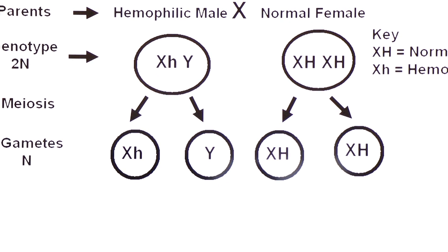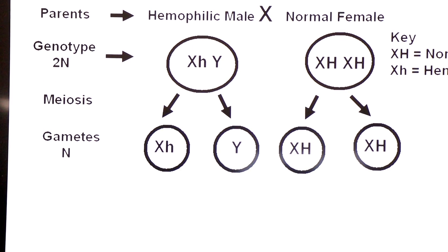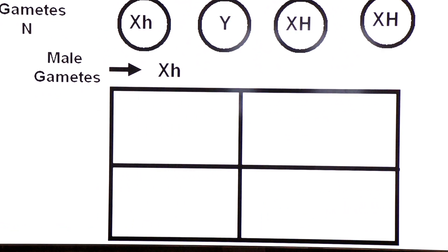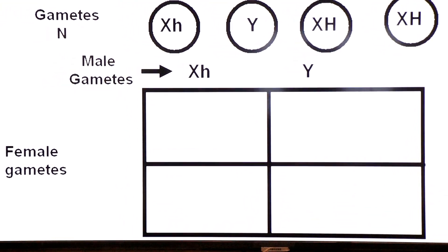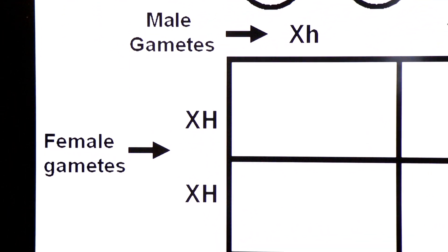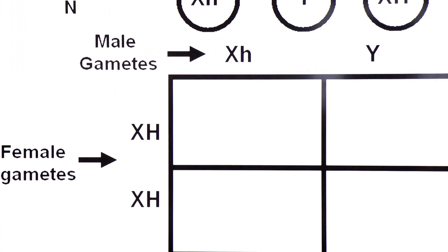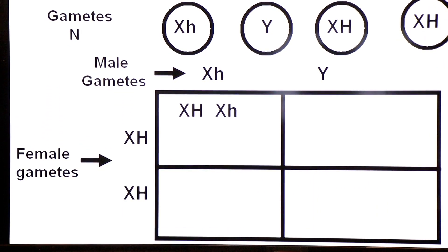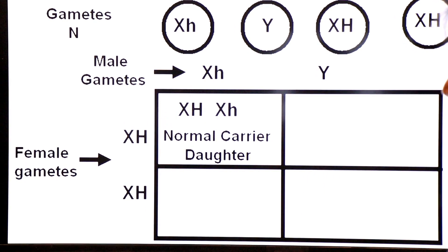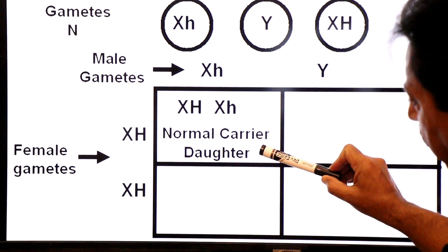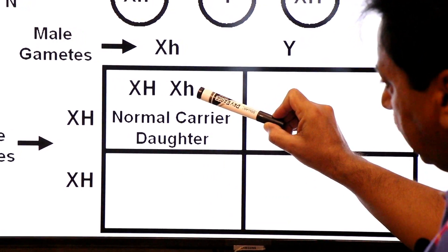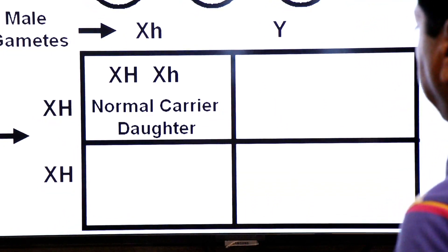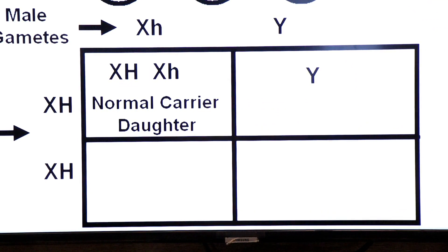Now we show possible offspring in a Punnett square. Male gametes (X small h and Y) are placed on top; female gametes (X capital H and X capital H) on the left. First box: from left X capital H and from top X small h — that will be a normal carrier daughter. A carrier is a person who has the gene for the trait but does not show it. Small h allele is present but its effect is suppressed by capital H on the other chromosome.